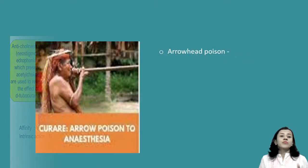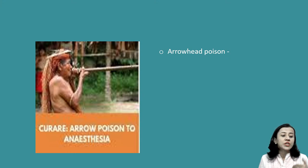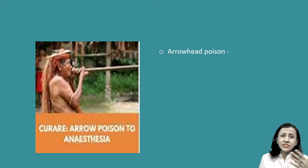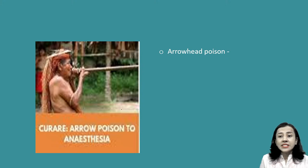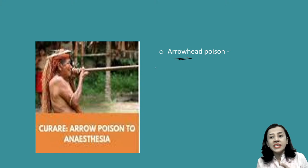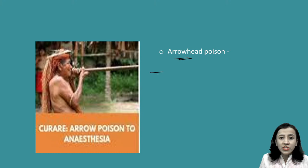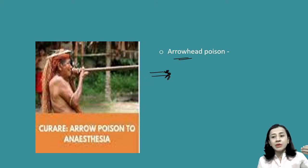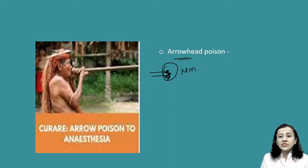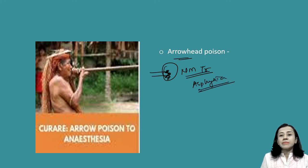Applied aspect: curare is used as arrowhead poison in some South American communities. They place curare on the head of the arrow for hunting. When they hunt an animal with the arrow, curare blocks the neuromuscular transmission, and the animal dies because of asphyxia — the respiratory muscles are paralyzed because neuromuscular transmission is blocked. Always write the clinical aspect in your answers; you are going to be a clinician and can score good marks.